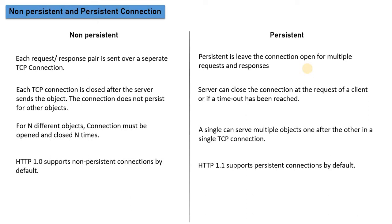In persistent connection, the connection needs to be continuous. So in this case, with a persistent connection, multiple requests are sent and we get responses — meaning we open different pages and get responses over a single TCP connection. Each TCP connection is closed after the server sends the object in non-persistent mode, meaning the TCP connection closes after a single object.